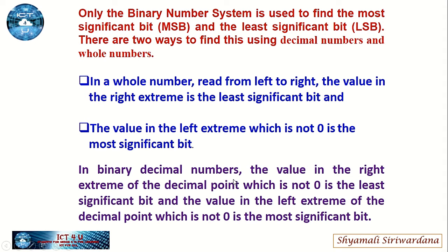One with the binary number system is used to find the most significant bit and the least significant bit. There are two ways to find this using decimal numbers and whole numbers. Now there are two methods. First one is: in a whole number, read from left to right — the value at the right extreme is the least significant bit.